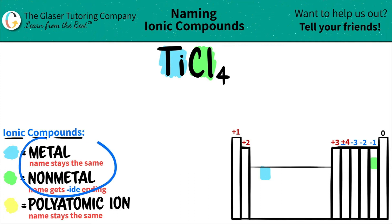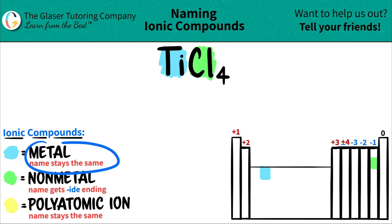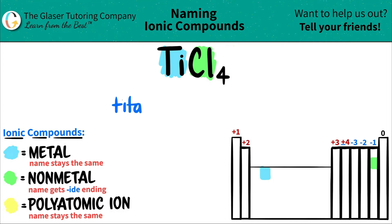Now we have all the elements accounted for, so we just have to name them. The metal name was stated first, so that name comes first, and that name always stays the same. So titanium would just stay titanium.